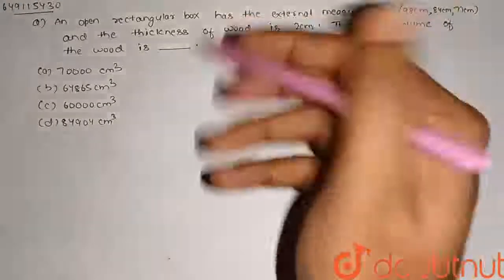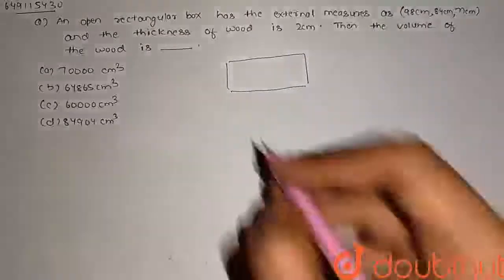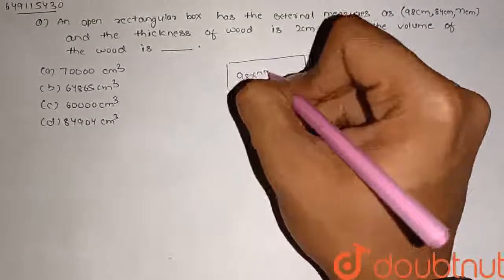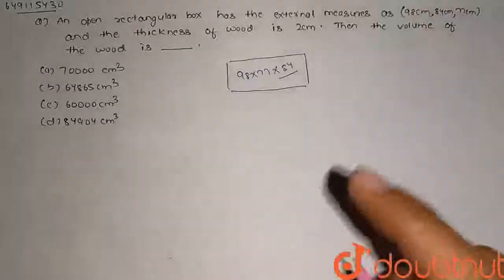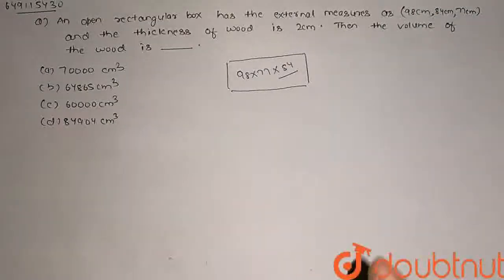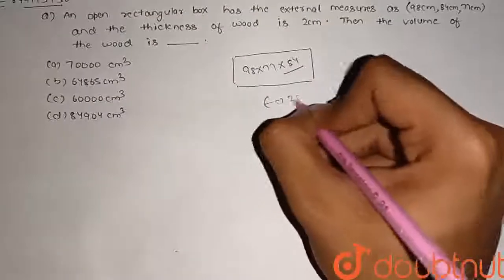This is a rectangular box. This dimension is given to you: 98cm x 77cm x 84cm. This is an external measure, the external dimension of the box. How much is the thickness? 2cm.